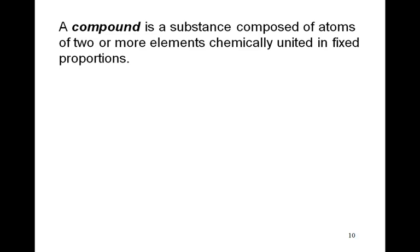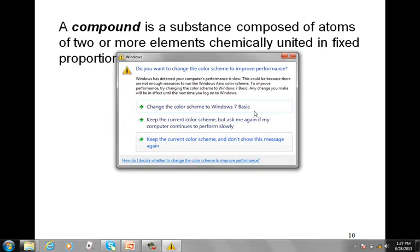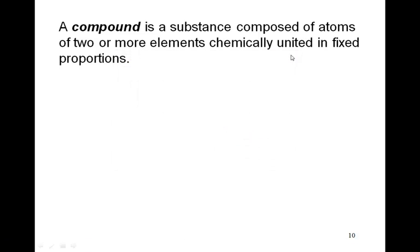Thinking of another type of pure substance, remember we had elements, and now we have compounds. Compounds is a substance composed of multiple atoms of different elements that are chemically united. When they say fixed proportions, that means they have definite proportions. H2O, water for example, you have fixed proportions of two hydrogens and one oxygen. That is an example of a compound.